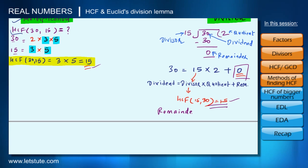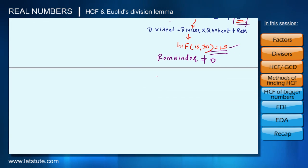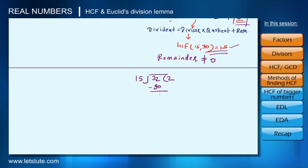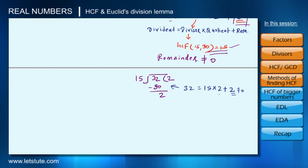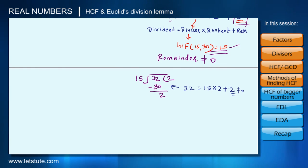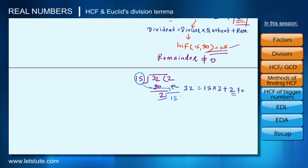Let's say instead of dividing 30 by 15, we divide 32 by 15. We get a remainder of 2, which is not equal to 0. We can write: 32 = 15×2 + 2, which is: dividend = divisor × quotient + remainder. Since the remainder is not 0, we cannot say the divisor 15 is the HCF. To find the HCF, we consider this remainder as the new divisor and 15 as the new dividend, and divide again: 15 ÷ 2 gives remainder 1.